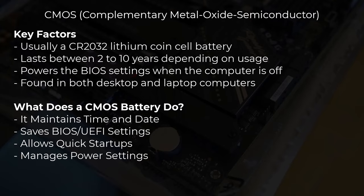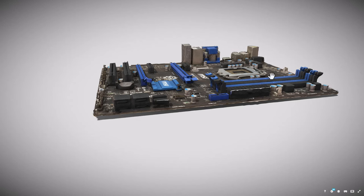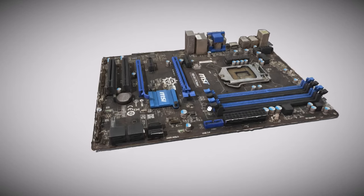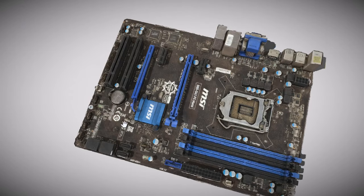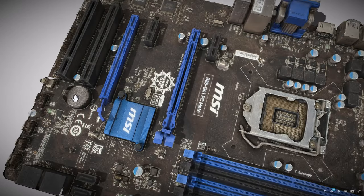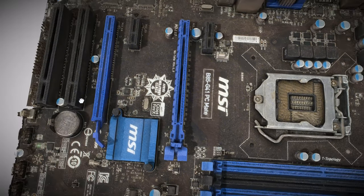The CMOS also manages power settings, helping control low-power modes like sleep and hibernation. As for location: on a desktop computer, the CMOS battery is usually easy to find once you open the case, often near the BIOS chip on the motherboard. For laptops, you may need to remove the bottom panel or disassemble part of the laptop to access the battery.